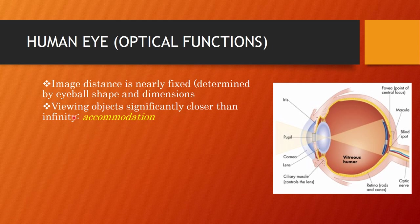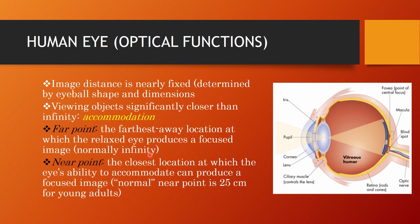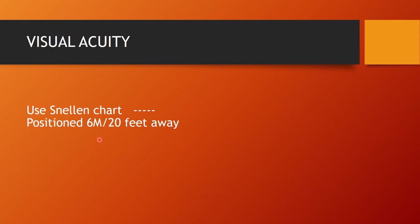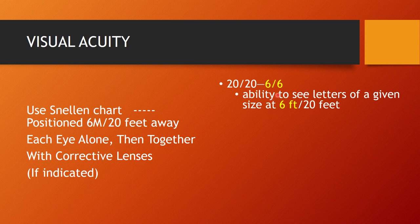While viewing objects closer than infinity, we need accommodation. The far point is the farthest point at which a relaxed eye produces a focused image — for a normal eye this is at infinity. The near point is the closest location at which the eye can produce a focused image with accommodation; normally this is around 25 centimeters. Visual acuity is recorded using Snellen charts positioned at 6 meters (20 feet), testing each eye separately and together, with and without corrective lenses. 6/6 (20/20) is the ability to see a letter of given size at 6 meters.